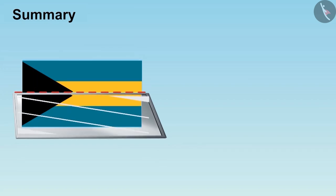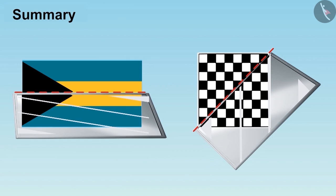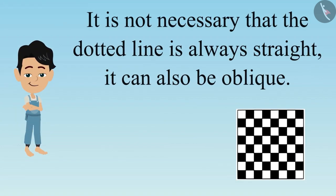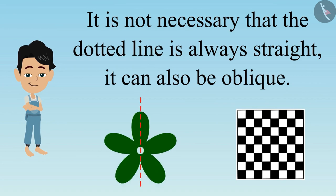Dear children, till now you have seen some examples and understood that if we place the mirror on the correct dotted line, then even the incomplete pictures are visible to us. And it is not necessary that the dotted line is always vertical, it can also be diagonal.